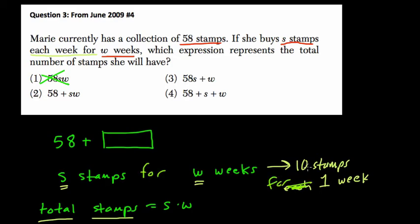So here, if it's 10 stamps for one week, it's 10 times 1, like Tim was saying, or 10 stamps. And you can imagine if it was 10 stamps for two weeks, well, you can just almost picture it, right? It's 20 stamps. But what you're doing each time is multiplying the number of stamps by the amount of weeks.